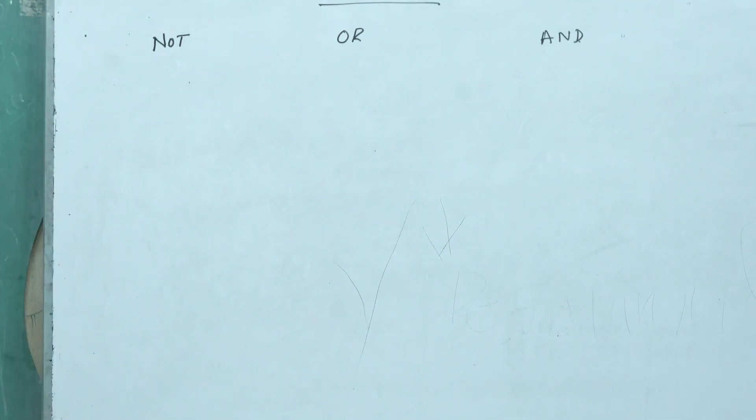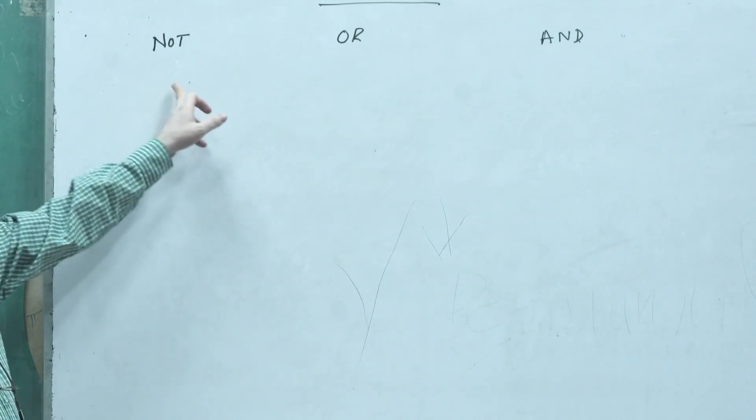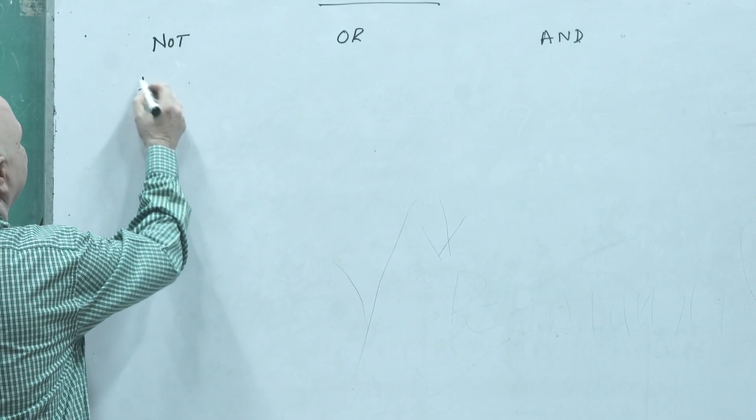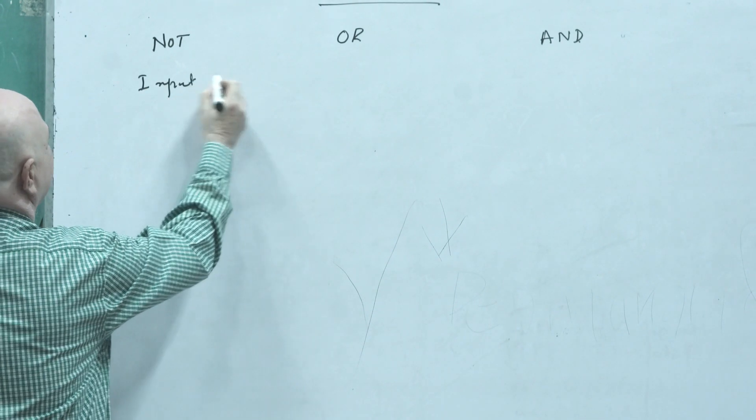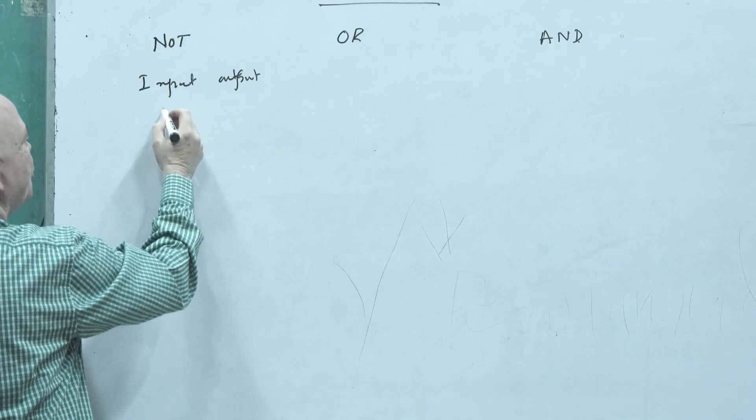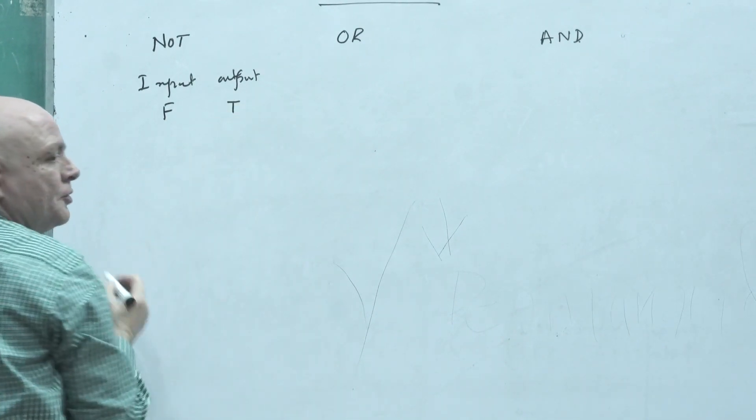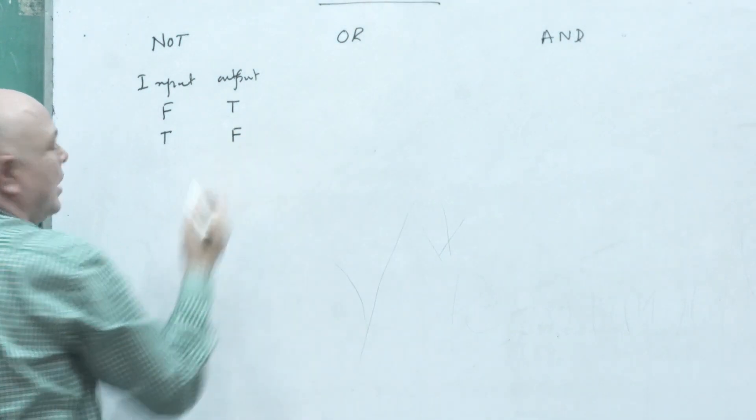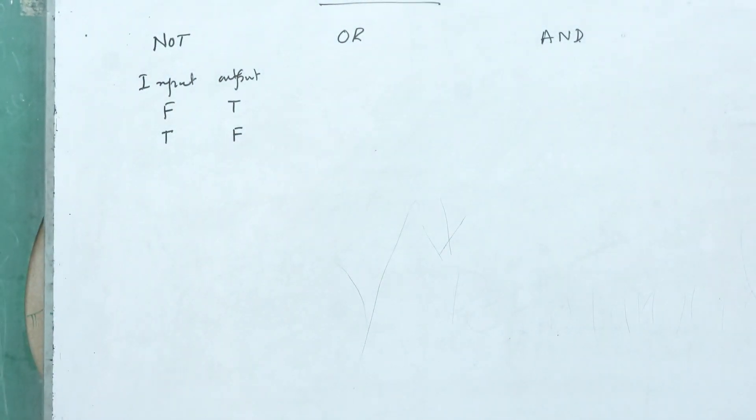Now in that case I told you about the NOT truth table. What happens normally in NOT we are giving the input and having the output. If input is false, output will be true, and if your input is true, output will be false. That's the negation, reverse of that one, opposite of that one.